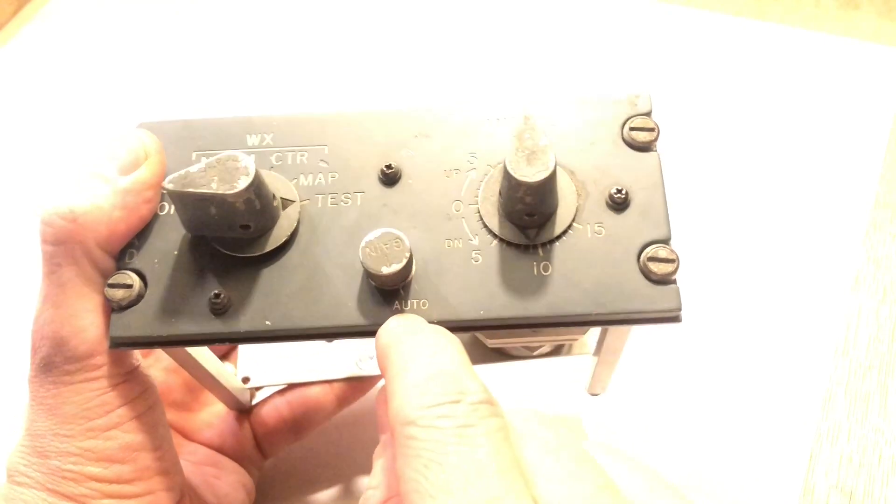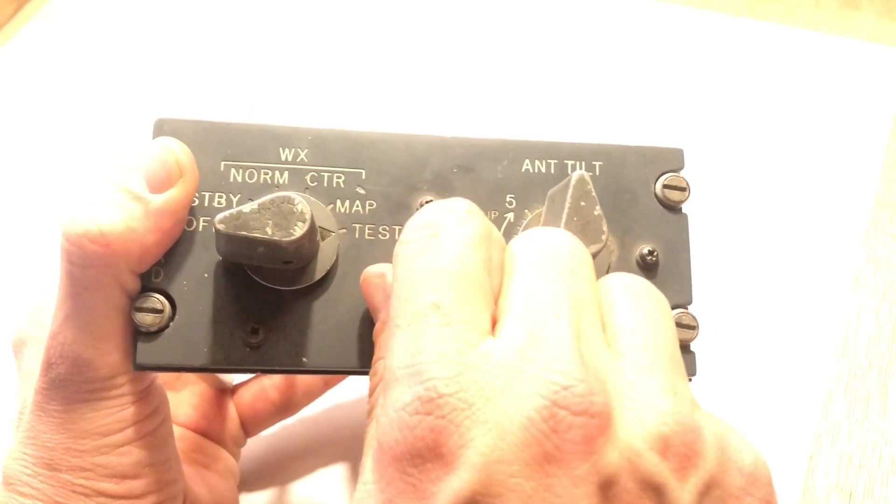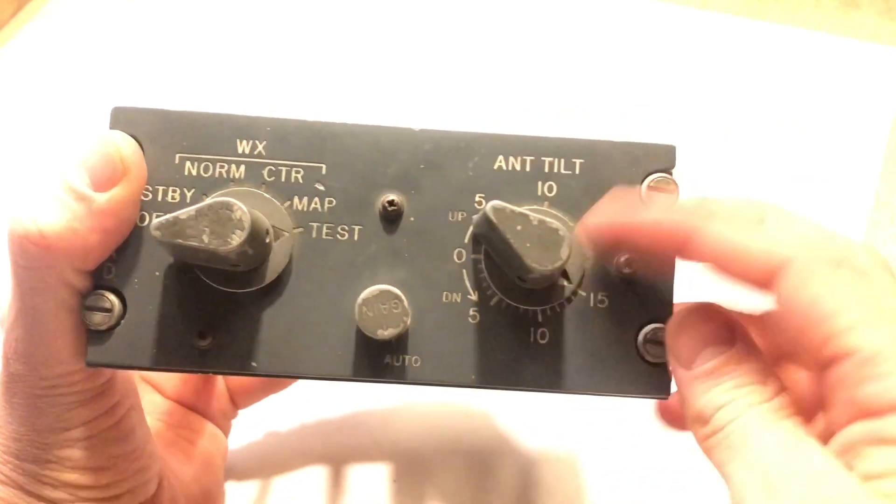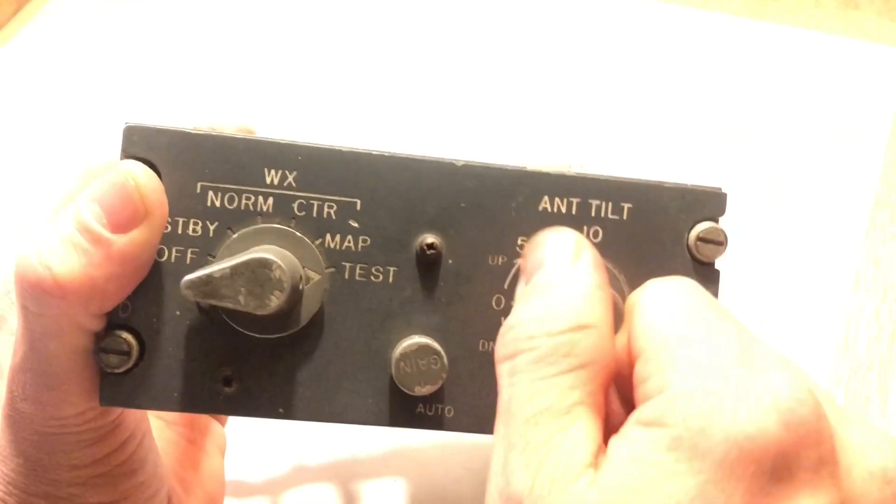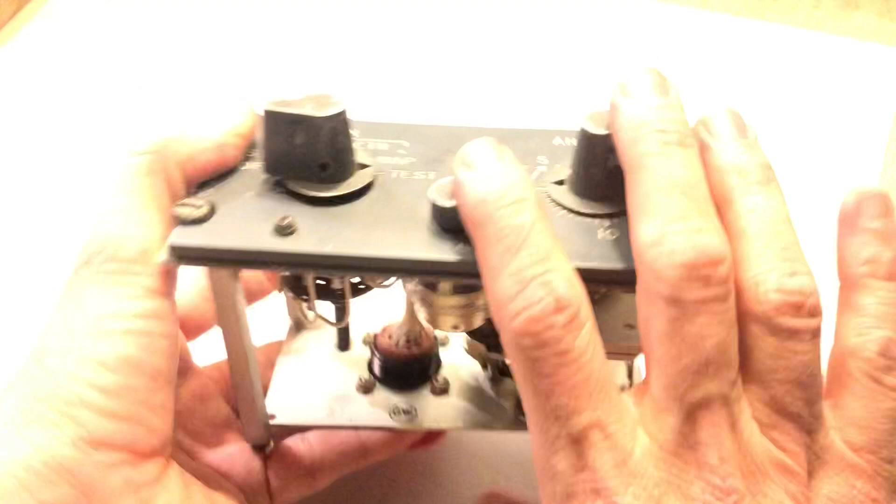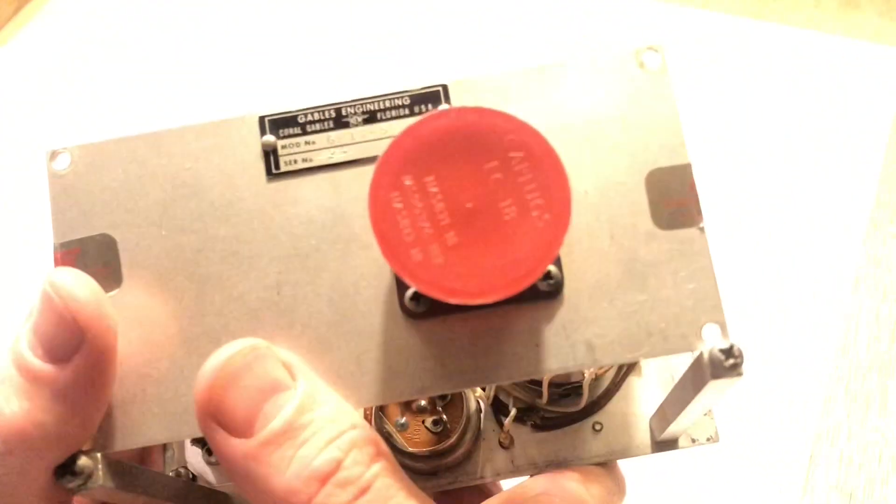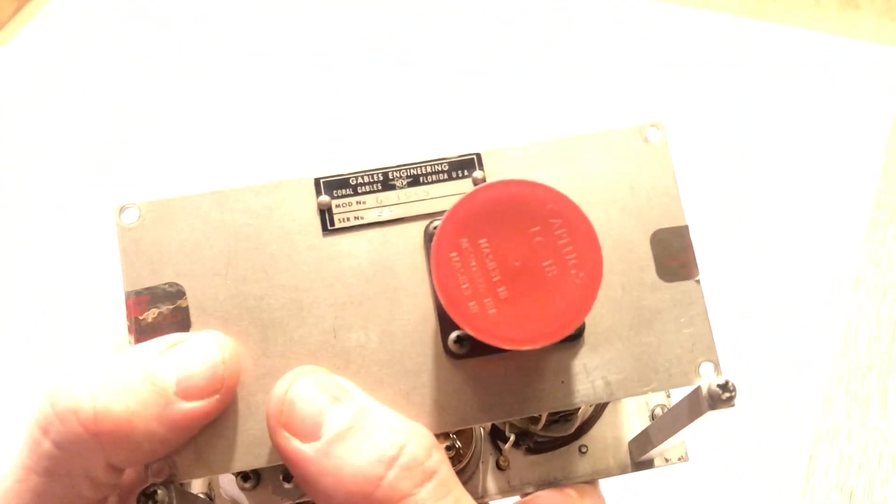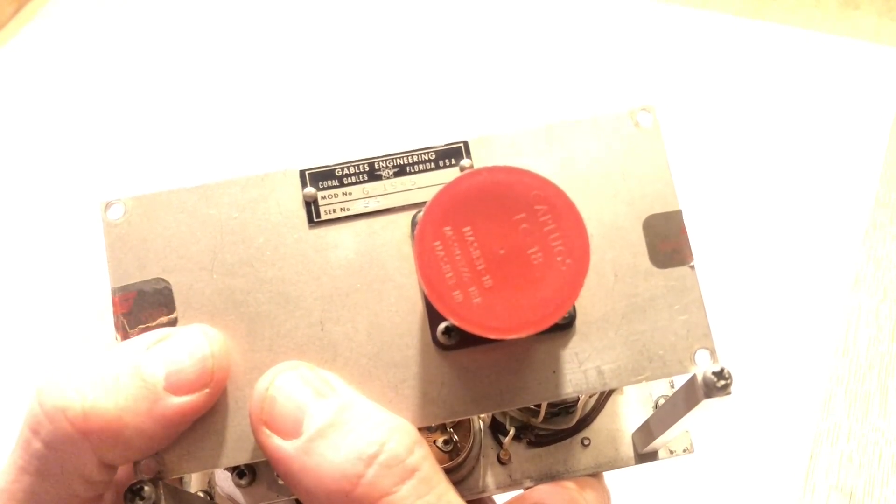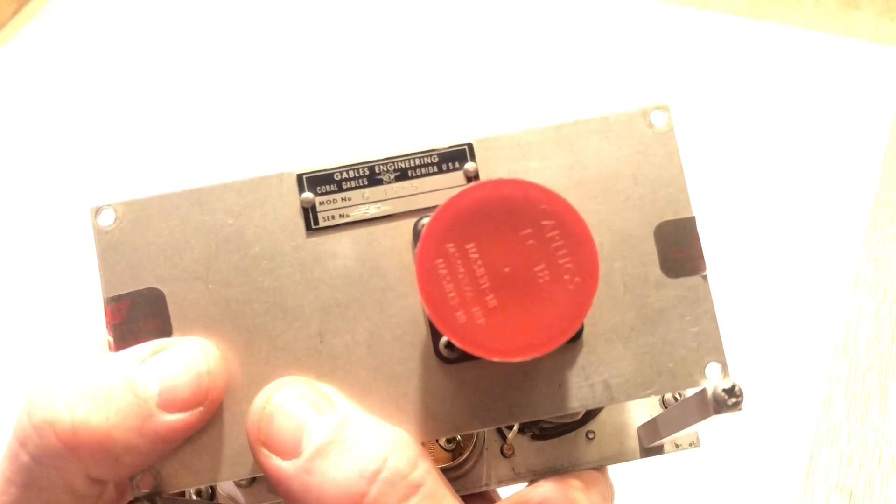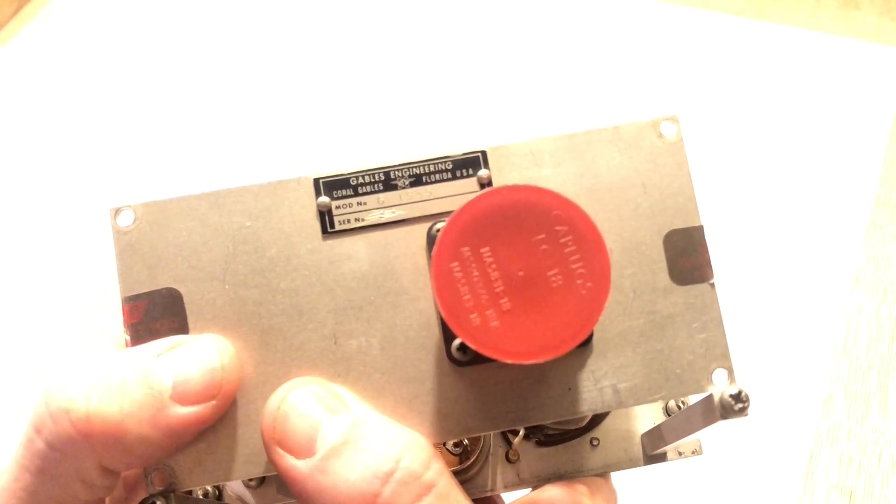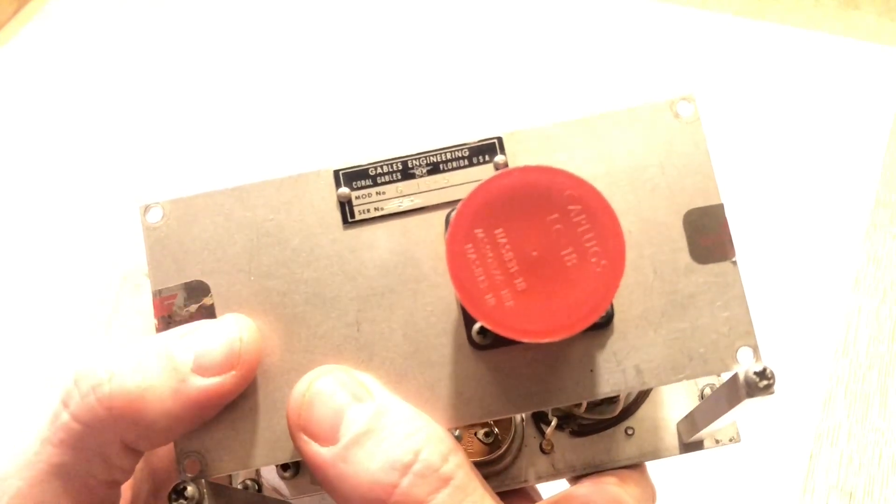The antenna tilt here goes from minus 15 to 10, pretty straightforward. Nothing special here. On the back you can see that it's a Gables—model number G1945 or 1945. The serial number has been scratched out, but the serial number is 34, which is a ridiculously low serial number.